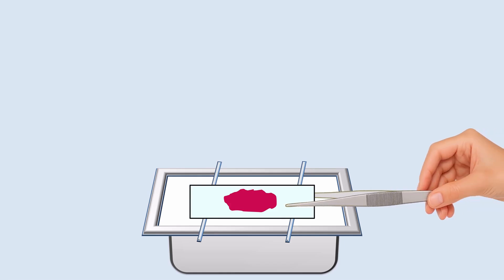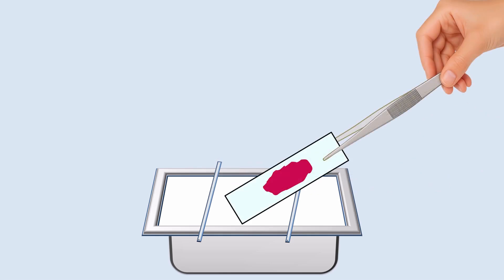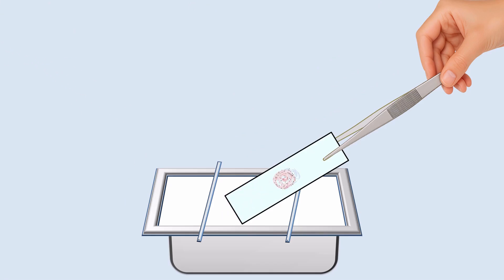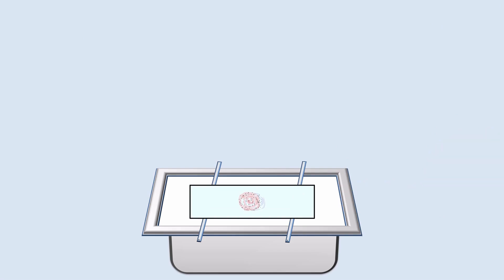Hold the slide on the staining tray at an angle, ensuring the stained smear is facing outward. Take a wash bottle filled with water and gently rinse the slide for 30 seconds to remove excess safranin. Now the washing is over. Let the slide air dry for a few minutes. Our staining is complete.